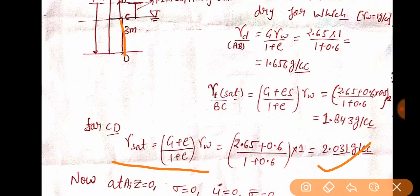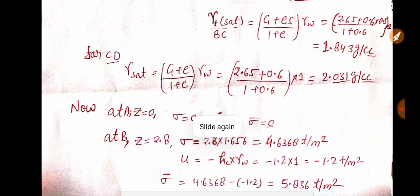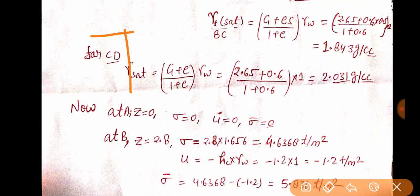Now we will calculate total stress, effective stress, and pore water pressure. Let's talk about portion A. At point A, Z = 0, so sigma = 0, U = 0, sigma bar = 0. Total stress considers the effect of each and everything — whether there is water there or soil, it considers the saturated portion's effect or gamma T's effect. It considers the complete effect.